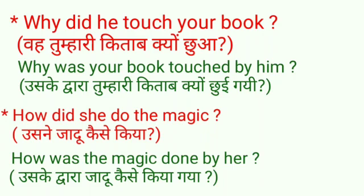दूसरा sentence: 'How did she do the magic?' — उसने जादू कैसे किया। Same procedure: 'How was the magic done by her?' — 'do' का third form है 'done'. 'She' subject से object में आकर 'her' बन गई। Meaning: उसके द्वारा जादू कैसे किया गया।